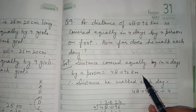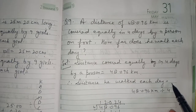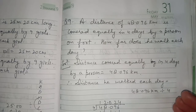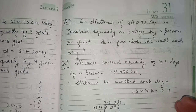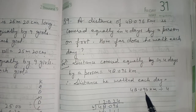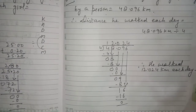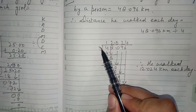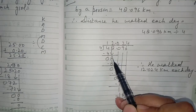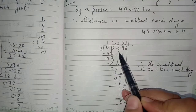Therefore distance walked each day = 48.096 km ÷ 4. Four 1s are 4, 4 − 4 = 0; bring down 8; four 2s are 8, 8 − 8 = 0; bring down 0; four 0s are 0, 0 − 0 = 0; bring down 9.